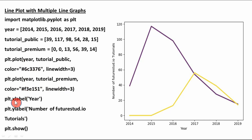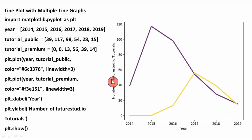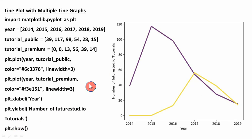We label the x-axis using the xlabel function and the y-axis using the ylabel function — for example, 'Number of FutureStudio.io Tutorials'. Finally we call the show function to display both line graphs. In this way you can draw multiple line graphs on the same plot.